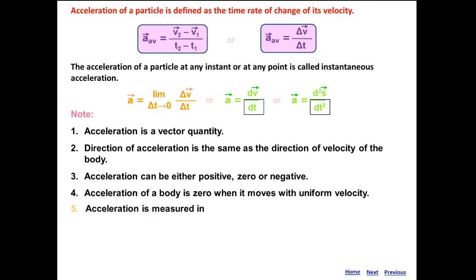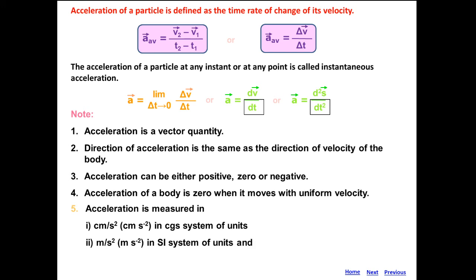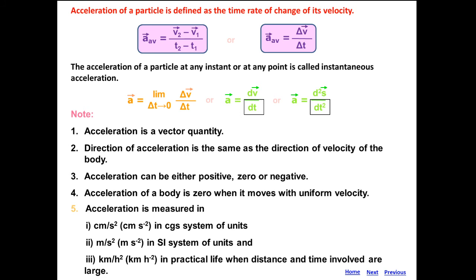Regarding units: in the CGS system, the unit of acceleration is centimeter per second squared, while in the SI system it is meter per second squared. Practically, we can also say kilometer per hour squared.